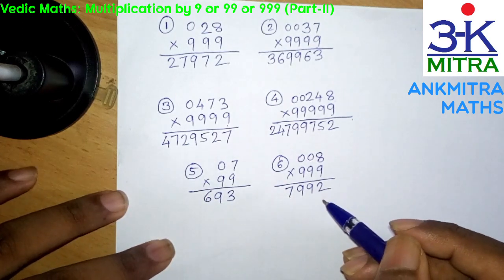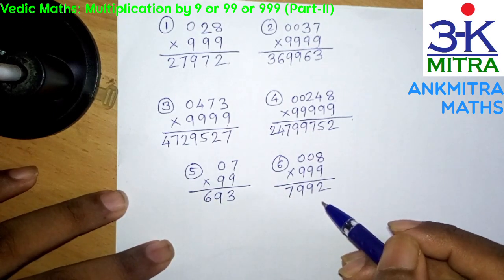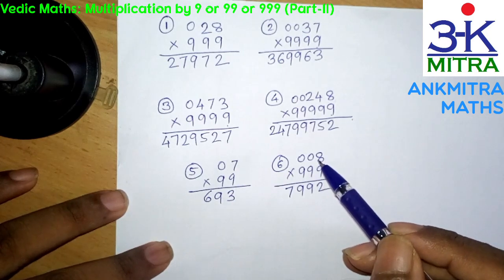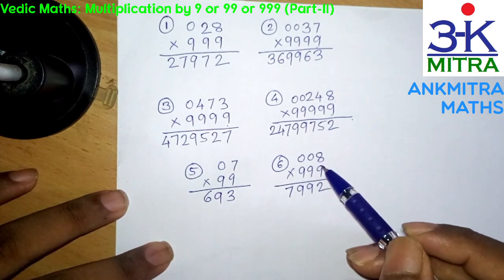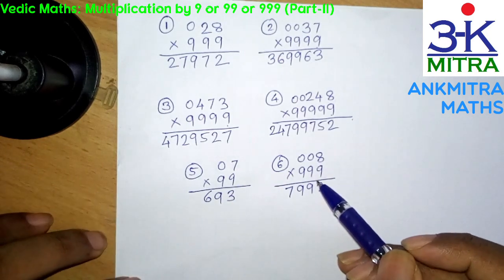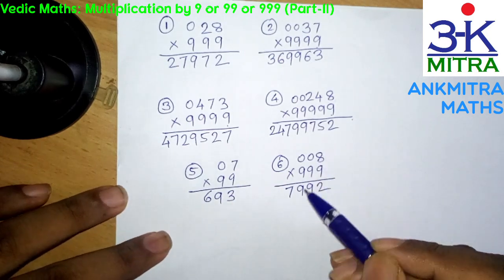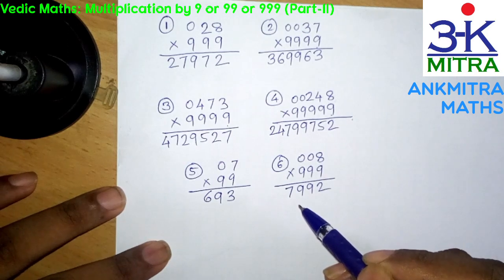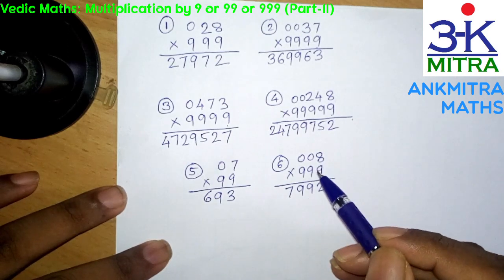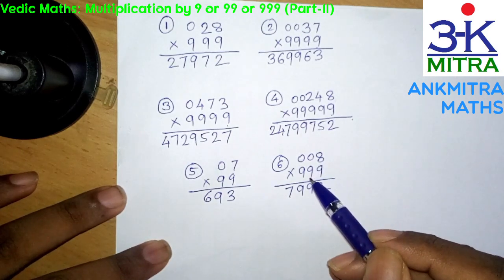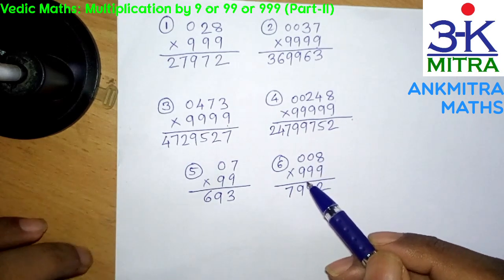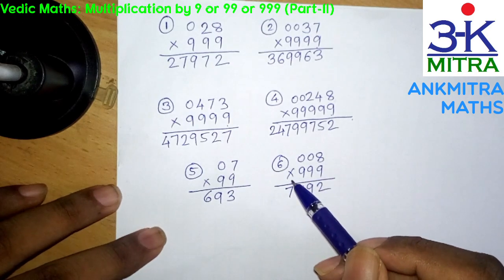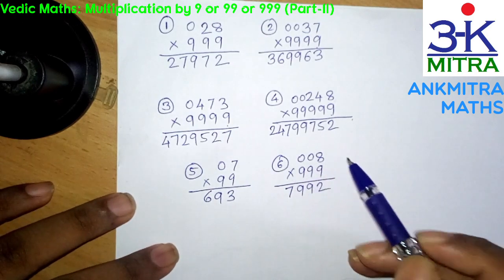I hope this Part 2 method is now clear and you make use of it whenever required. In the next video I will be focusing on Part 3, which will cover the case where the multiplicand — the first number — has more number of digits.